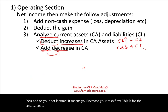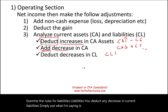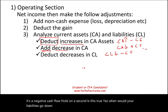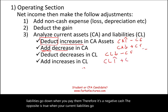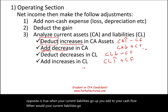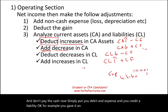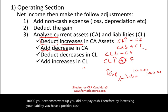Now let's examine the rules for liabilities. You deduct any decrease in current liabilities. If current liabilities go down, it's a negative cash flow — because when would your liabilities go down? When you pay them, which uses cash. The opposite is true: when your current liabilities go up, you add to your cash flow, because you are operating your business without paying cash right now — you debit an expense and credit a liability. Your expenses went up but you did not pay cash, so by increasing your liability, you have a positive cash flow to your net income.